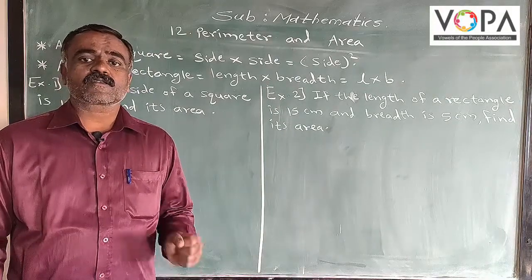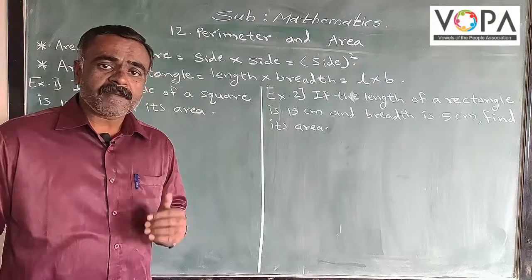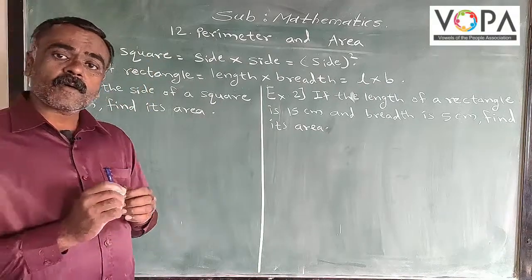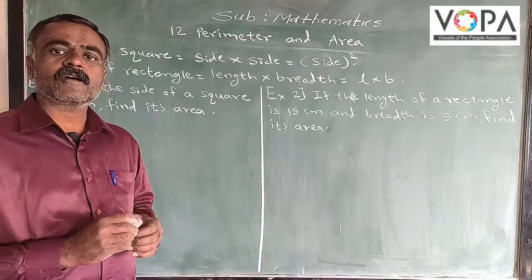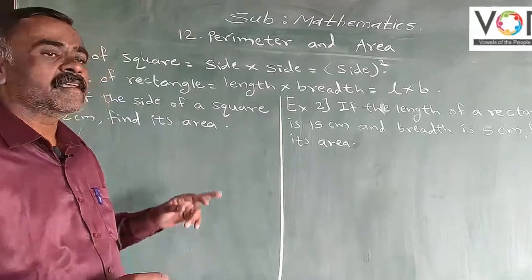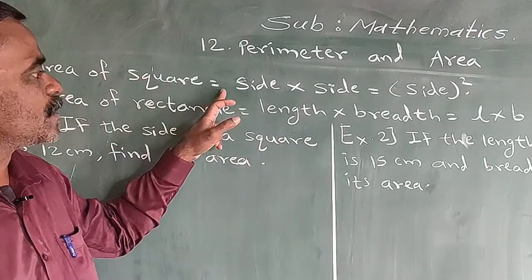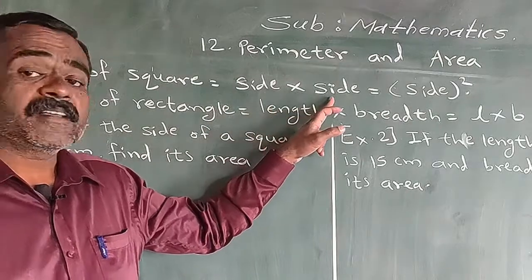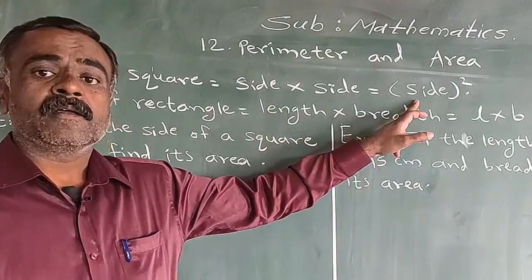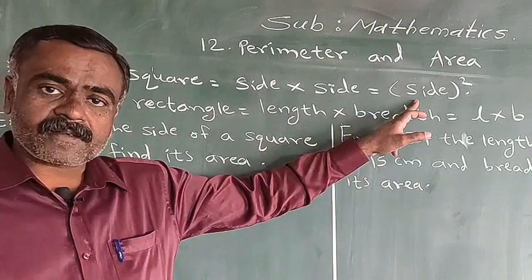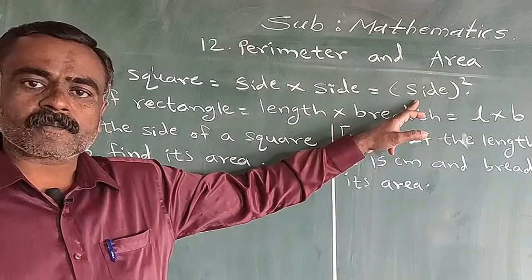Now our next topic is to find out the area of a closed figure. First, the area of a square. The formula to calculate the area of a square is: area of square is equal to side into side, which is equal to side squared. By using this formula we can calculate the area of the square.